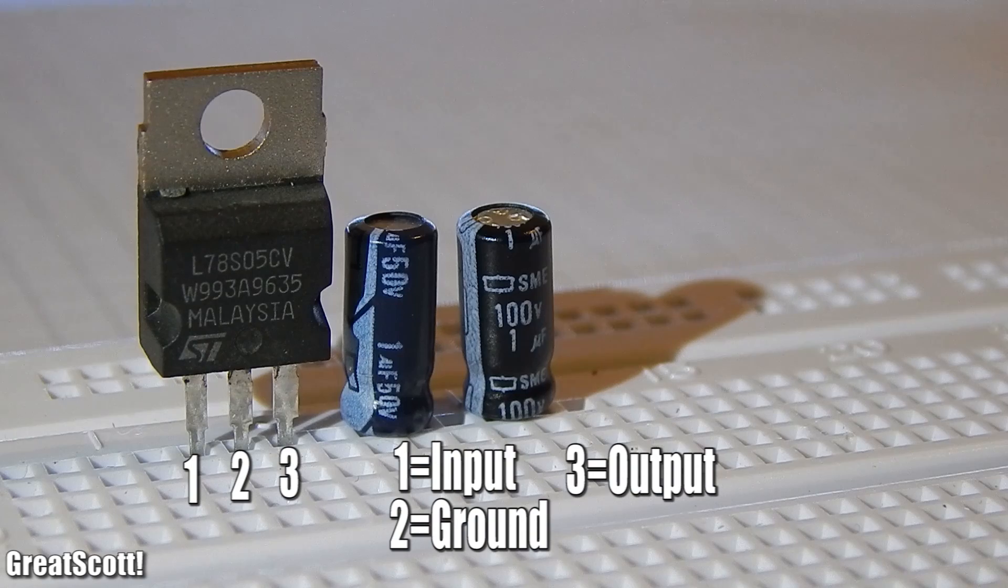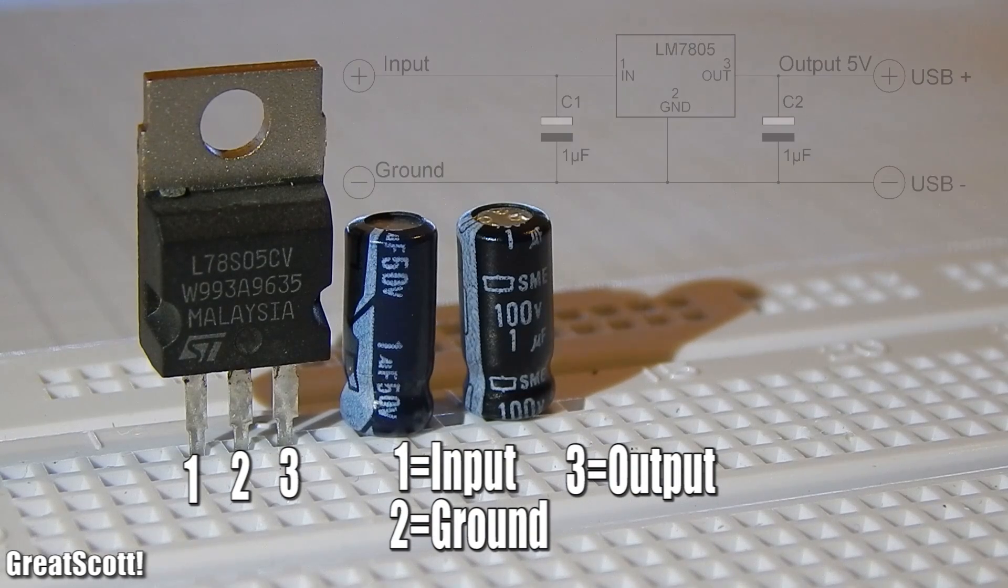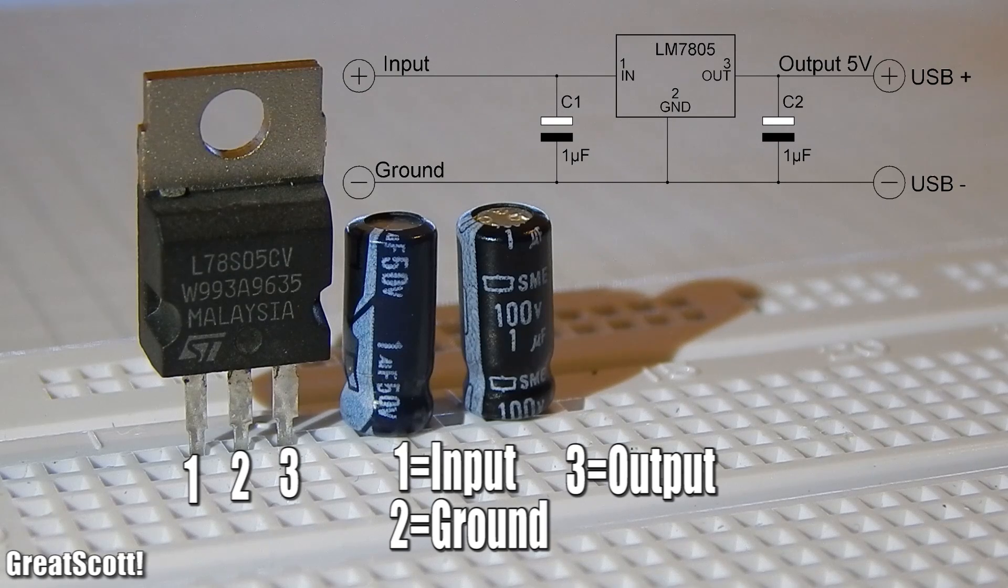The IC has three pins: input, ground and output. Ground connects to the negative side of the caps, and one positive side to input and the other to output. Should be pretty easy.